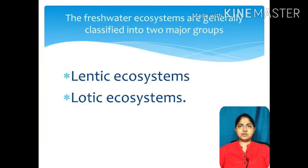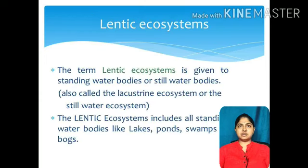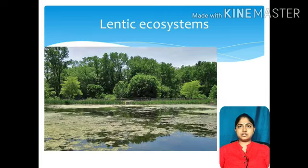Freshwater ecosystems are generally classified into two major groups: lentic and lotic ecosystems. The term lentic ecosystem is given to standing water bodies, also called the lacustrine ecosystem or the still water ecosystem. The lentic ecosystem includes all standing water bodies like lakes, ponds, swamps, and bogs.